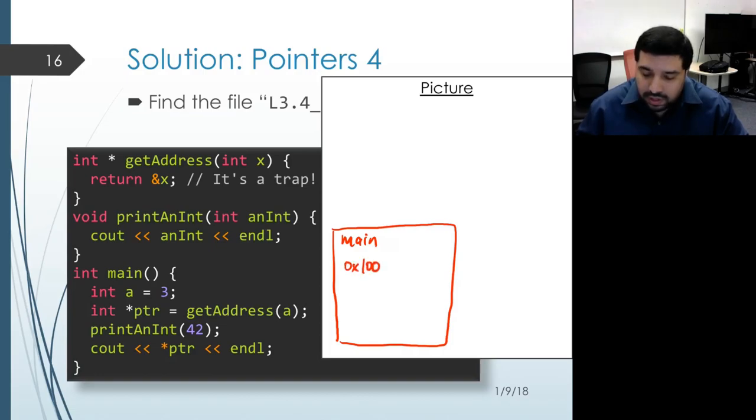So let's assume that A gets placed at address 1000, and that PTR gets placed at address 1004. Now when the body of main executes, the first thing that happens is the initialization of A. So A gets initialized to 3.